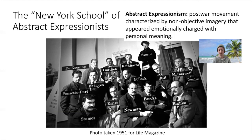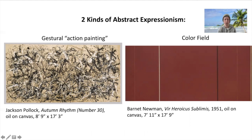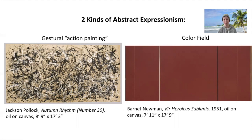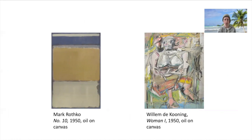Broadly speaking, their work is characterized by non-objective imagery that appeared emotionally charged with personal meaning. The painters fell into two broad groups: those who focused on a gestural application of paint, and those who used large areas of color as the basis for their compositions. Pollock's innovative technique of dripping paint on canvas spread onto the floor of his studio prompted critic Harold Rosenberg to coin the term 'action painting.' Color field painting consists of large expanses of color, usually flatly painted, as we see in this example by Barnett Newman on the right.